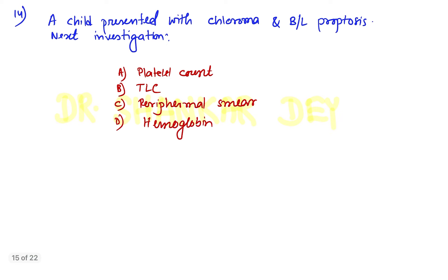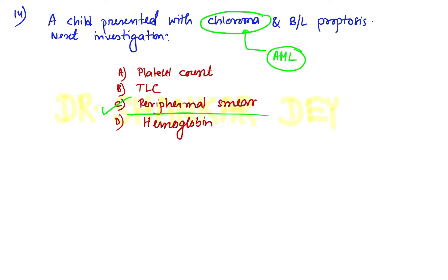Question number 14: A child presented with chloroma and bilateral proptosis. The next investigation for this question — the answer will be peripheral smear. Chloroma is nothing but extramedullary blast cells. Chloroma is usually seen in AML, acute myeloblastic leukemia, most commonly in the M2 variety. To diagnose AML, you will perform a peripheral smear as the next investigation.